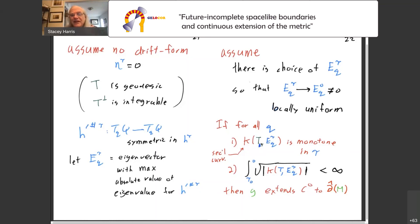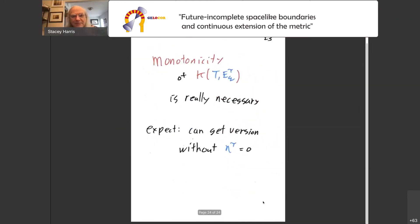Then the theorem is, if my sectional curvature on the timelike two planes formed by T and E is monotone, and if further, the square root of the absolute value of that sectional curvature is integrable, then G does extend in a C zero manner to the boundary. And somewhat to my surprise, that monotonicity requirement is really necessary. Otherwise you get counterexamples.